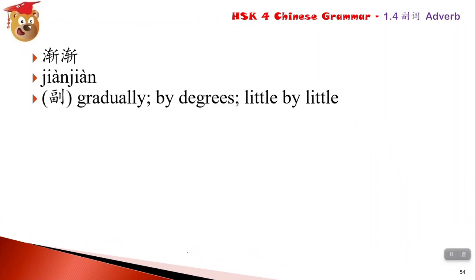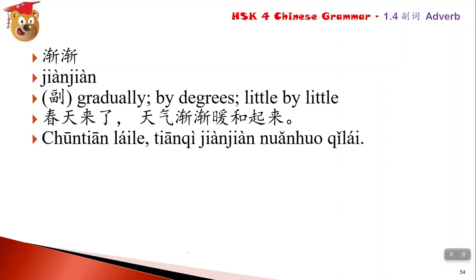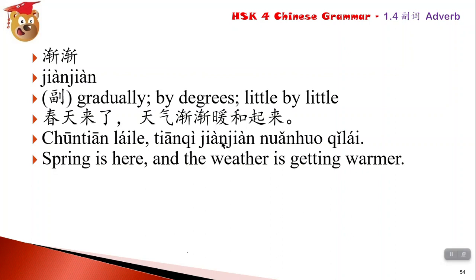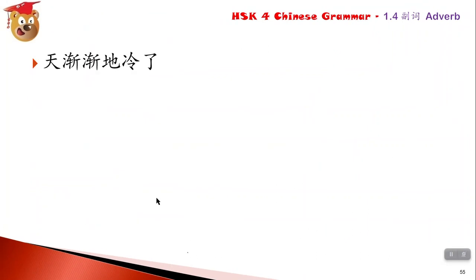渐渐 means 'gradually.' For example: 春天来了，天气渐渐暖和起来了 - spring is coming and the weather is gradually warming up. 天色渐渐暗了 - the sky is gradually getting darker. 天渐渐地冷了 - it is gradually getting cold.